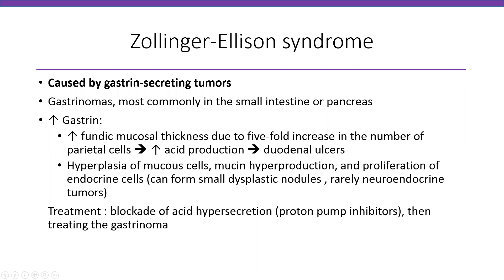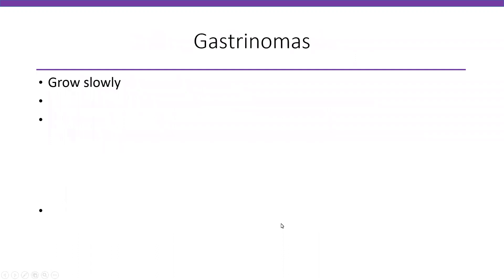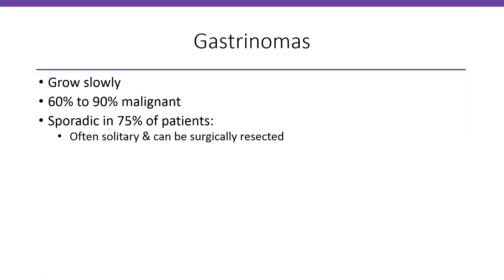For treatment, the first line is to block acid hypersecretion — you give the patient proton pump inhibitors to prevent the duodenal ulcers. Then you treat the gastrinomas by resection or other methods. These gastrinomas grow very slowly. 60 to 90% are malignant. They are sporadic in 75% of patients, often solitary, and can be resected surgically.